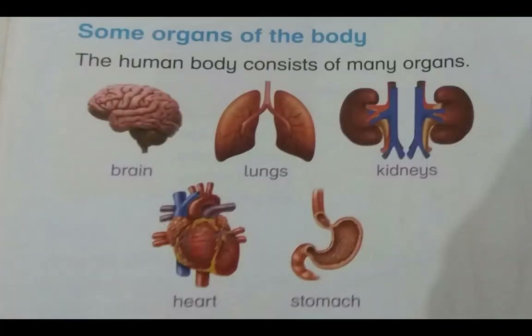The human body consists of many organs. The brain is the control center of the body. Lungs help in breathing. Kidneys help in excretion of waste from the body. The heart pumps blood to all parts of the body. The stomach helps in digestion of food.